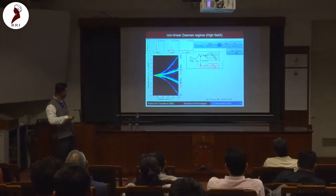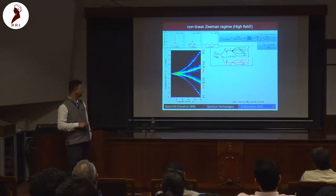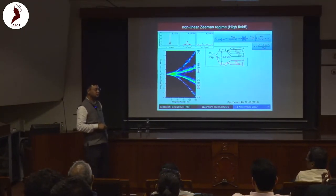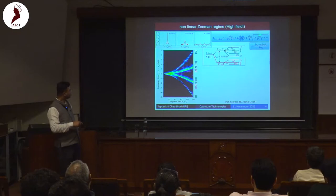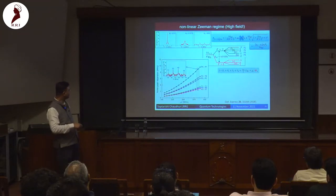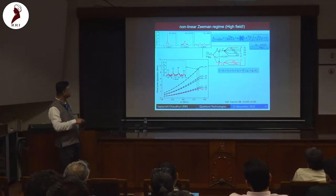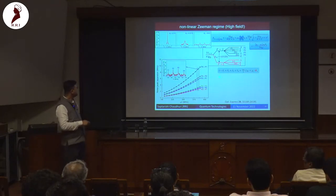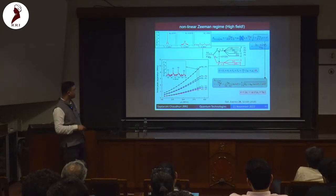Going to very high fields we enter the Breit–Rabi regime, where you can see quadratic Zeeman effects and the nuclear spin contribution to spin noise spectroscopy. We have very precise measurements from fits using the Breit–Rabi formula, yielding high-precision nuclear g-factor measurements and in turn the magnetic field.